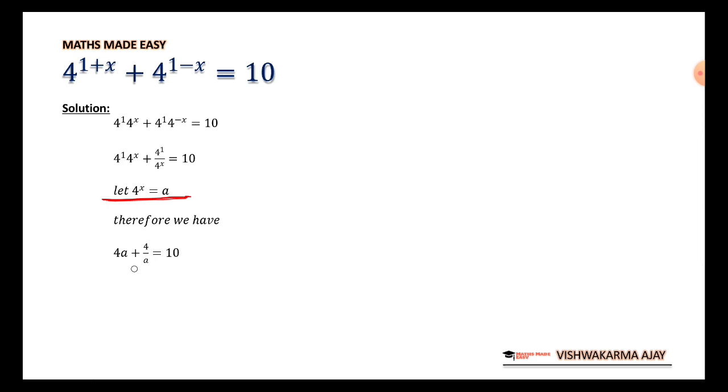Now we are going to apply basic mathematics, we are going to multiply the entire equation with a. 4a² + 4 = 10a because a will get multiplied with 10 also.